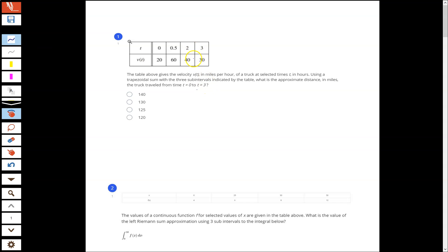In this first problem we have a table with t and v of t, the velocity of the truck at certain times. We're going to use a trapezoidal sum with three subintervals to approximate the distance the truck travels. This is just like our introductory problem in the first lesson of the unit. So trapezoidal sum, our three subintervals are going to be between the four numbers in the table. If we imagine these points, I'm going to sketch the graph. So our graph might look something like this.